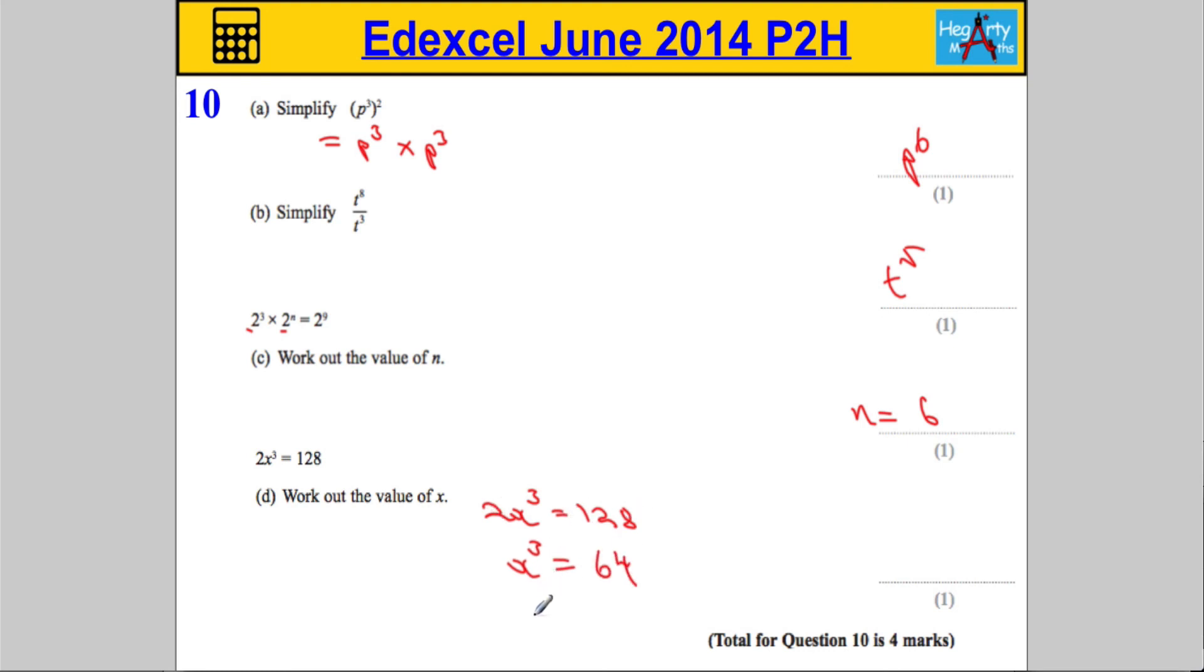And then I'm going to take the cube root of both sides, the cube root, so a little square root symbol with a little 3 here, of 64. You can do that in the calculator if you wish. I know that the cube root of 64 is 4. So x equals 4.